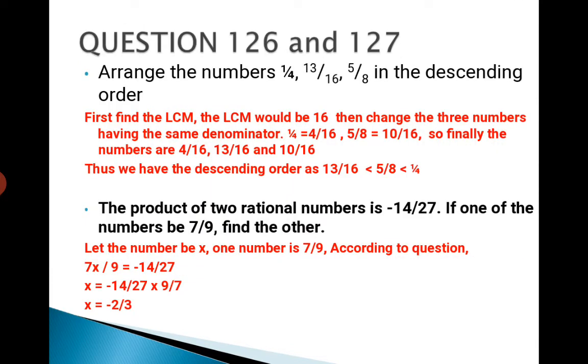Question 126 and 127: Arrange the numbers 1/4, 13/16, and 5/8 in descending order. Descending order means from big to small. First we have to find the LCM. LCM of all these rational numbers will be 16. Now we will change these three numbers to have the same denominator. Therefore, 1/4 will become 4/16, 5/8 will become 10/16, and 13/16 we already have.